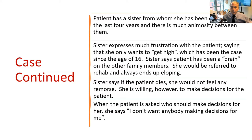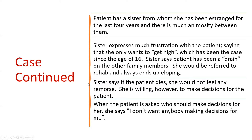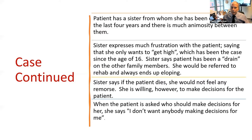In talking to the sister, she expresses much frustration with the patient, saying she only wants to get high, which has been the case since age 16. The sister says the patient has been a drain on the family. The patient would occasionally be referred to rehab, and she always ended up eloping from that facility. The sister says if the patient dies, she will not feel any remorse. She is willing, however, to make decisions for the patient. When asked who she wants to make decisions for her, the patient says, 'I don't want anybody making decisions for me.'